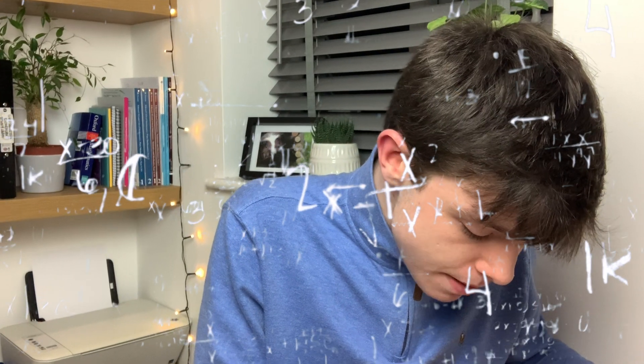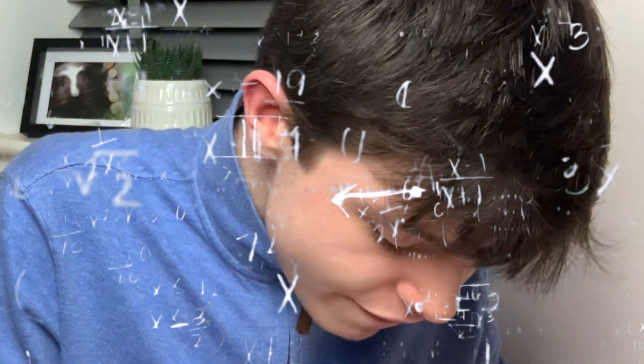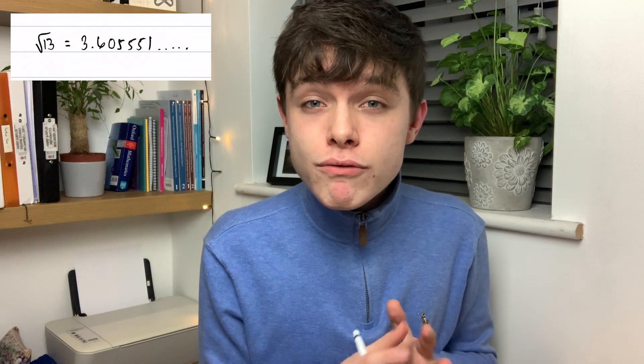If we press S to D on our calculator — which converts the number into a decimal — we can see that the calculator gives us 3.6055, and that carries on. Root thirteen is 3.605551... and those decimal places will carry on forever. From looking at the two ways we can write root thirteen, I think you'll agree that writing it as root thirteen is much better than writing it as the decimal equivalent.